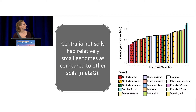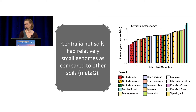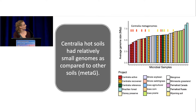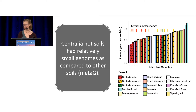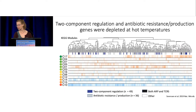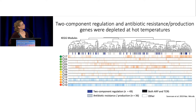We then wondered whether our Centralia metagenomes were just unusual, so we pulled high-quality metagenomes from MG-RAST, selecting ones with similar coverage to our JGI metagenomes. When we compared average genome sizes, the hot soils from Centralia on average had smaller genome sizes than other comparable soil metagenomes. This holds true across a broad range of soils. We then asked: what is special about these small genomes — do they have particular functional genes enriched or depleted that can tell us how microbes in hot soils make a living and adapt to that environment?